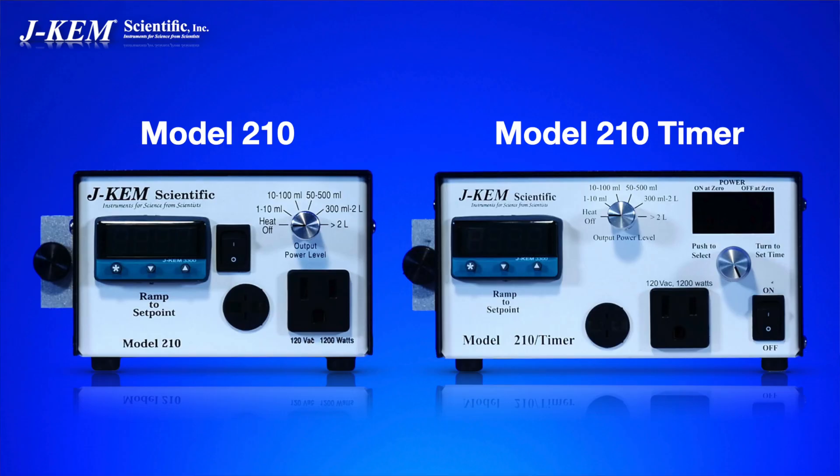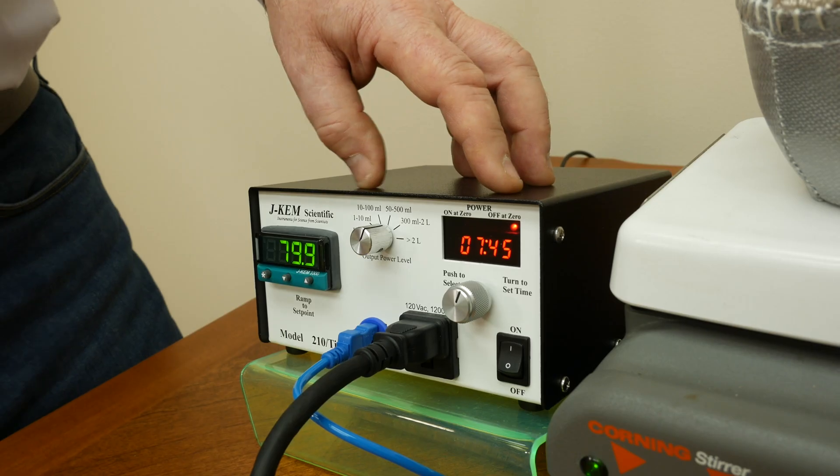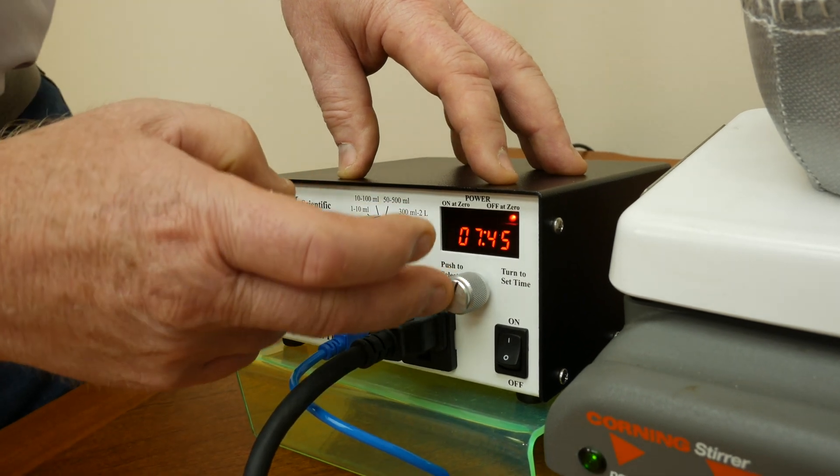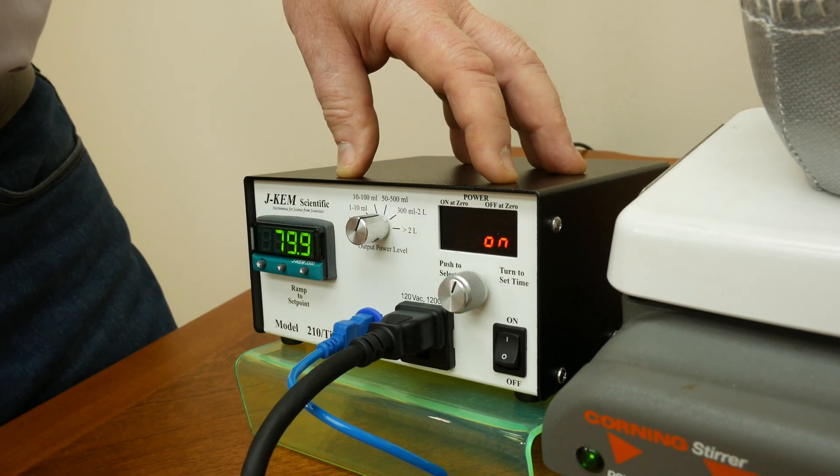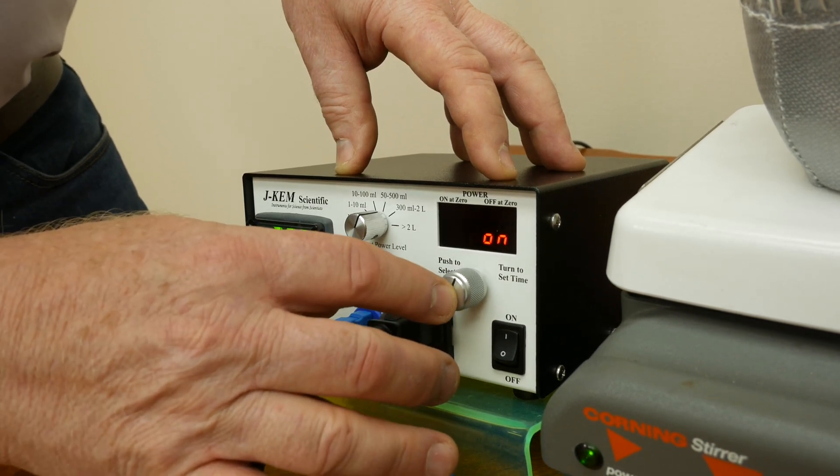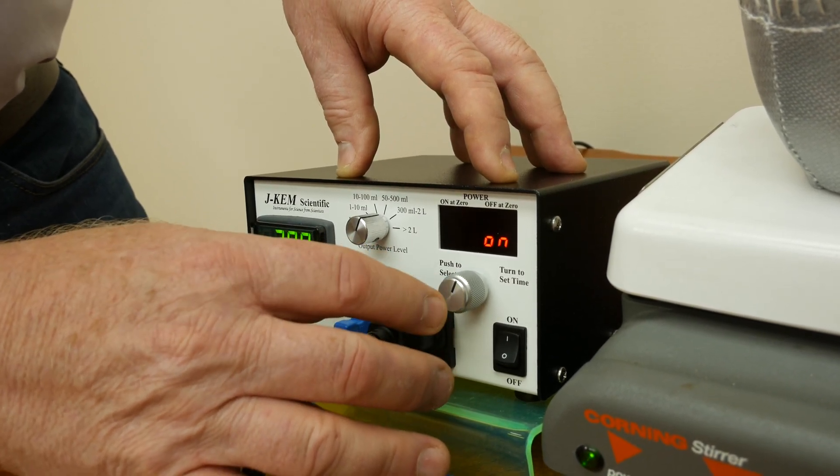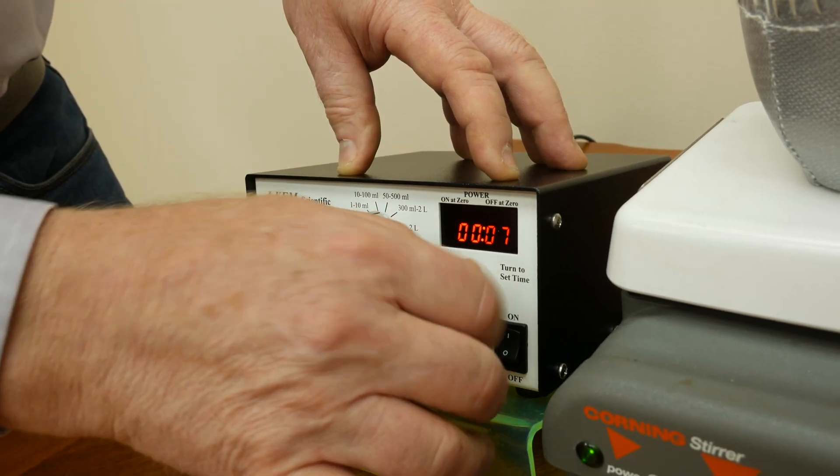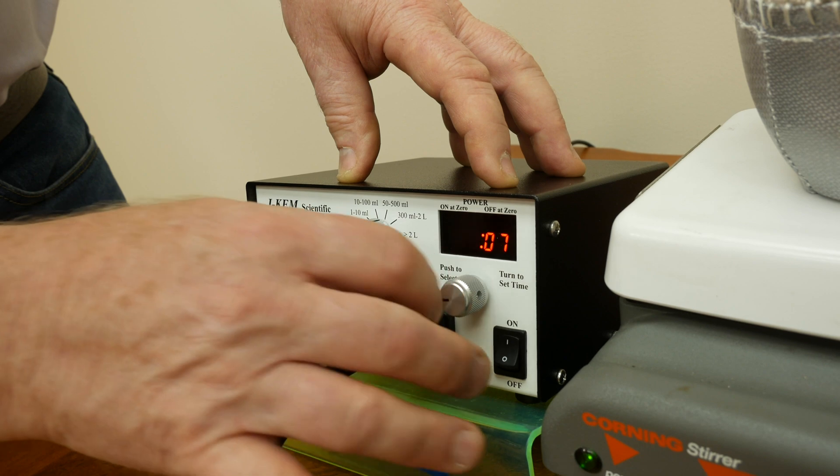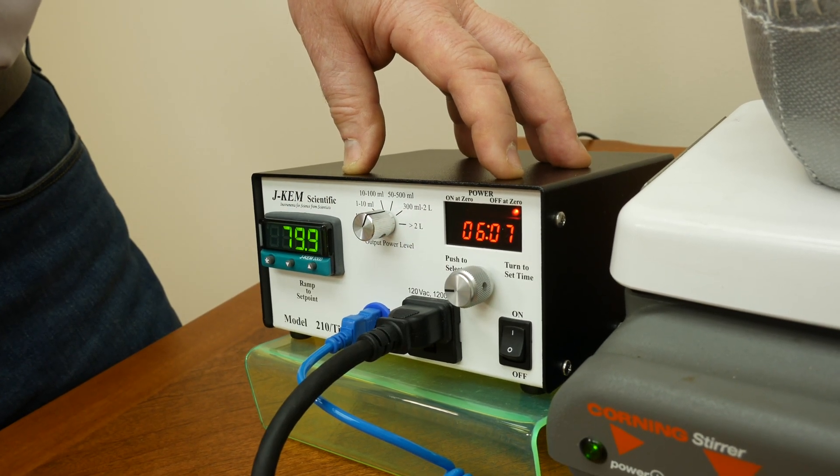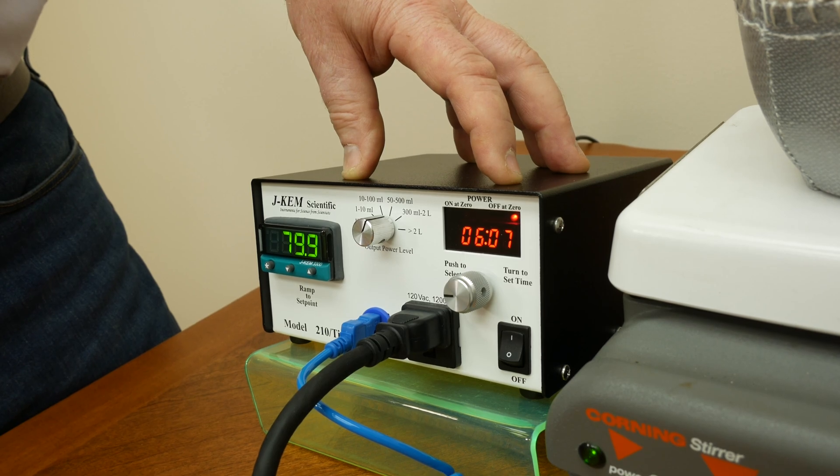Some of our models have timers and some do not. This one does. This is our model 210 timer. And so what it lets me do, I can either turn on power continuously in that case or I can set a time. So in this case now it's going to go off in six hours instead of minutes.